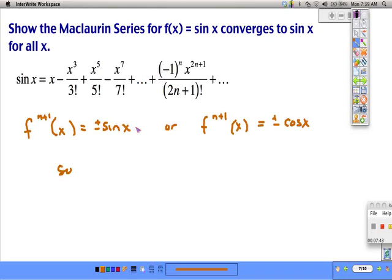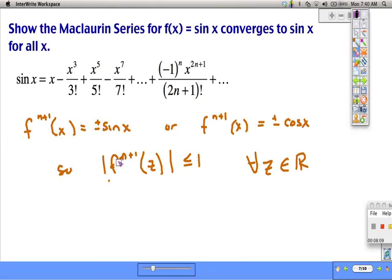Because the n plus first derivative is either going to be sine or cosine, worst case scenario for our n plus first derivative evaluated at z is going to be 1 for all z on real numbers. That has to be the case.